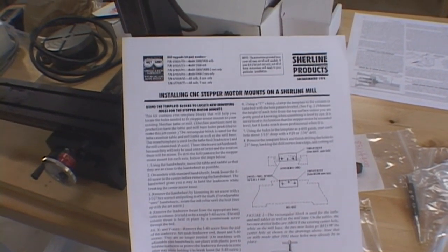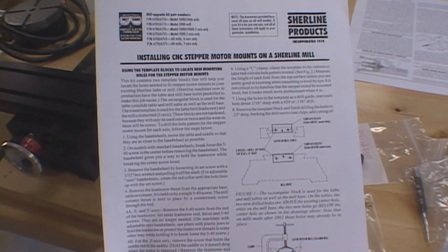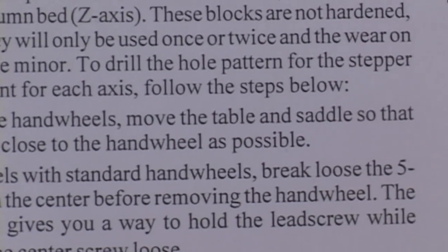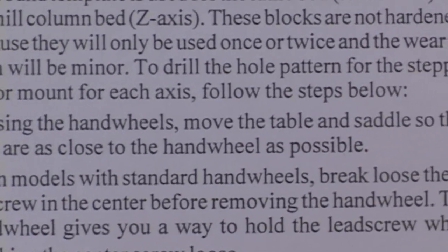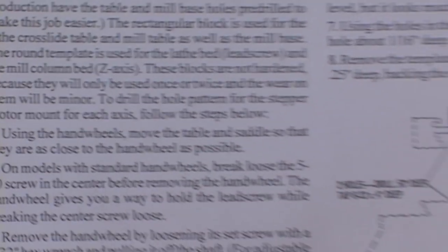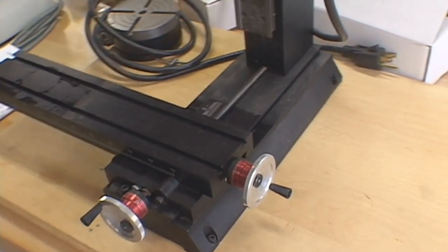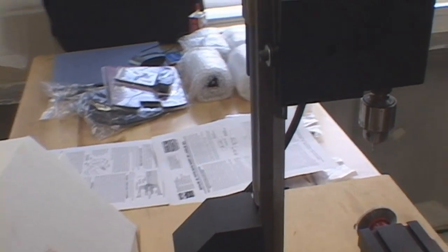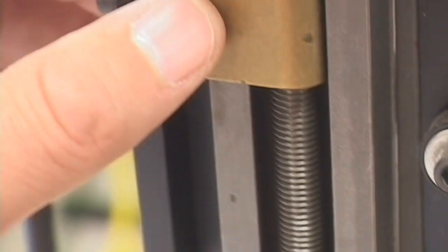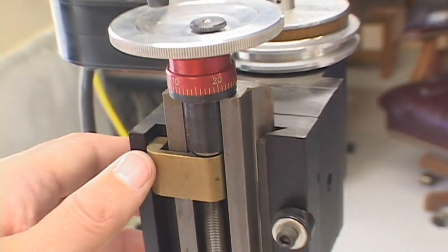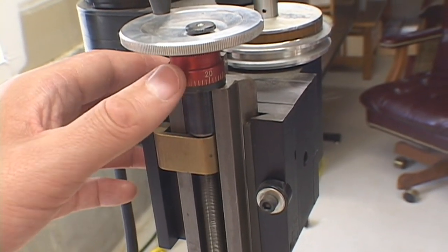This is the instruction sheet for installing the CNC stepper motor mounts and step one says using the hand wheels move the table and saddle so that they are as close to the hand wheel as possible. Well my interpretation of that looks something like this. The hand wheels are closer and the saddle as I understand it is this little part here, that's where the thread is riding on to push the axis, so that's got the saddle close to the hand wheel.